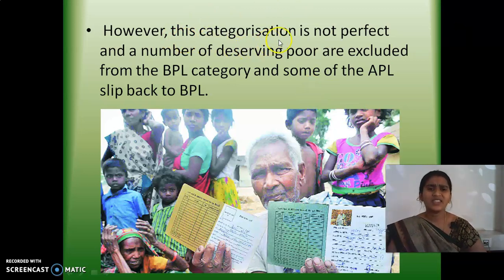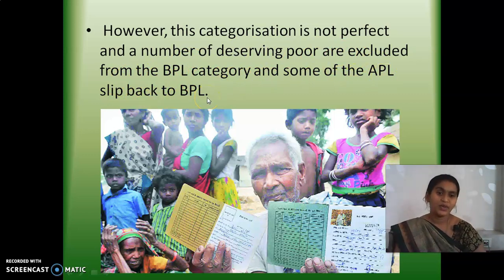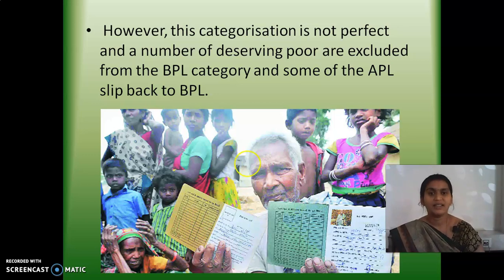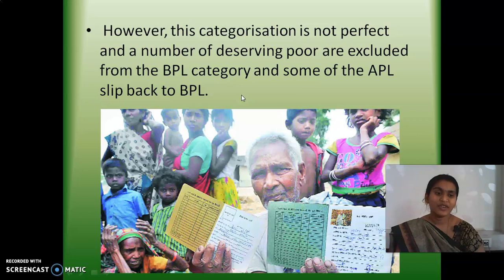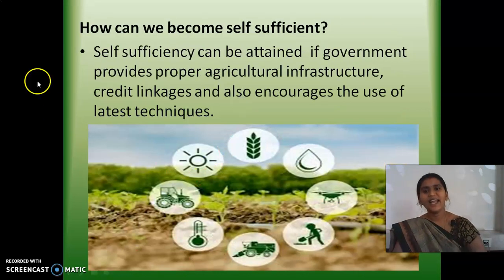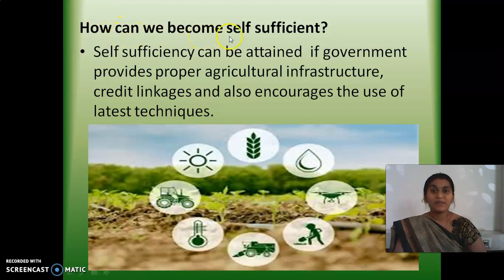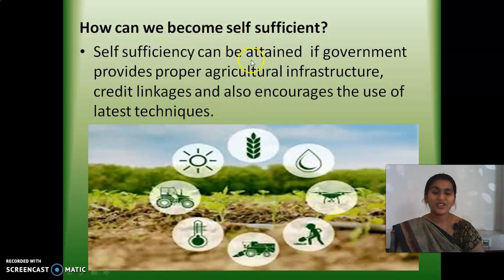This categorization is not perfect, and some deserving poor are excluded from the BPL list, while some APL people — above poverty line — step back to the below poverty line list just to get the facilities. That is the major drawback of this consumer categorization. Hope you all understood this concept. Next, we will see about how we can become self-sufficient in the production of agricultural crops, given all the problems we are facing.